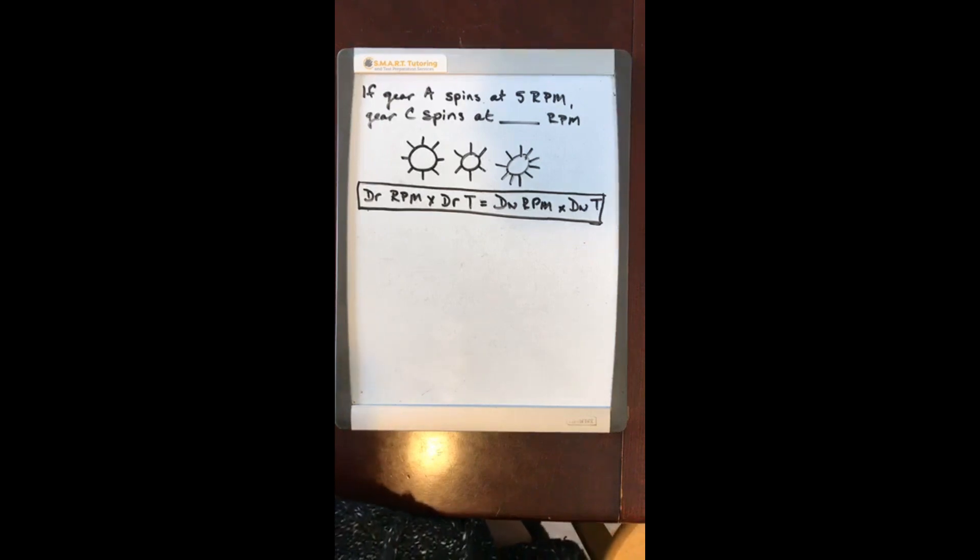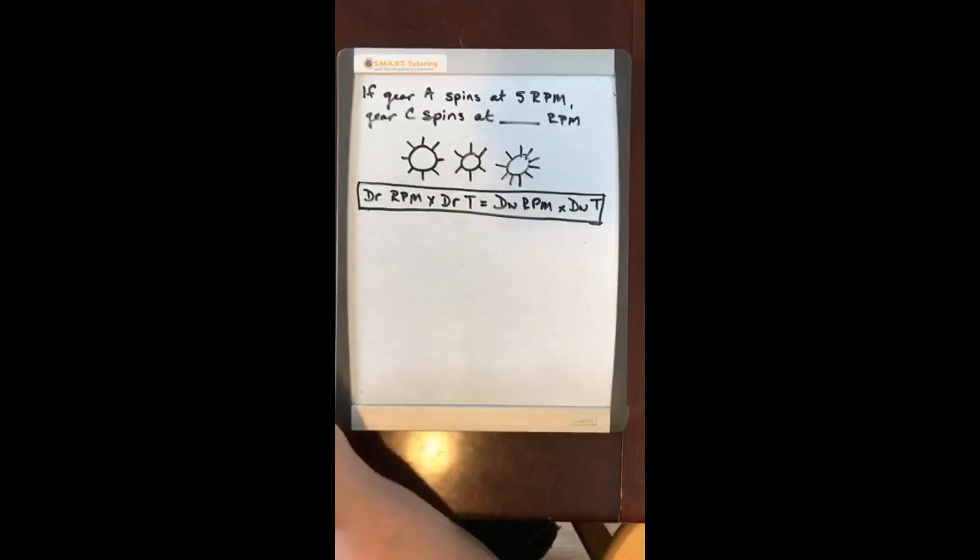So the question is: if gear A spins at 5 rpm, gear C spins at x rpm. Our goal is to determine how many times gear C spins if gear A spins at 5 rpm.